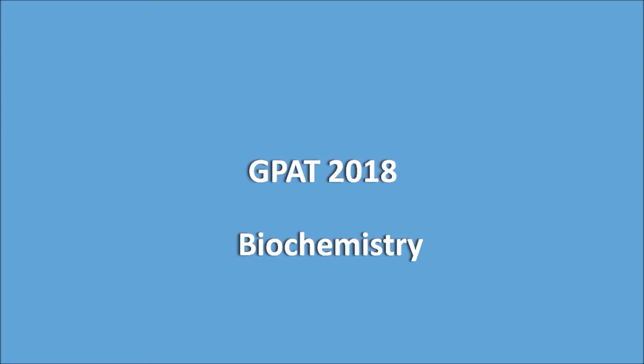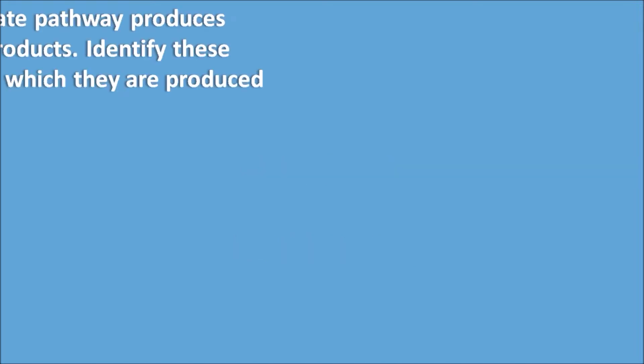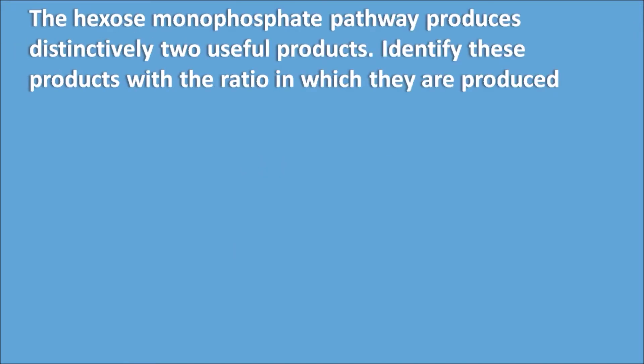In this video we will see the GPATH 2018 questions from Biochemistry. The Hexose monophosphate pathway produces distinctively two useful products. Identify these products with the ratio in which they are produced.